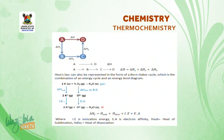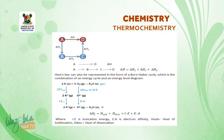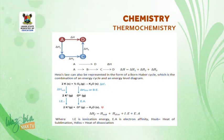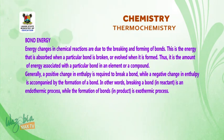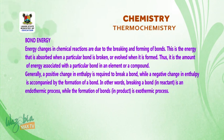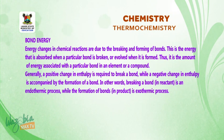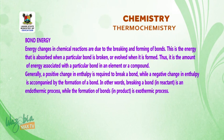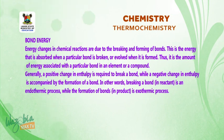Hess's law can also be represented in the form of a Born-Haber circle, which is a combination of an energy cycle and energy level diagram. For example, for potassium reacting with oxygen to form potassium oxide, the heat of formation of potassium oxide equals heat of sublimation plus heat of dissociation plus ionization energy plus electron affinity. Energy changes in chemical reactions are due to the breaking and forming of bonds. Bond energy is the energy absorbed when a particular bond is broken or evolved when it is formed — the amount of energy associated with a particular bond in an element or compound. Generally, a positive change in enthalpy is required to break a bond while a negative change in enthalpy accompanies the formation of a bond. Breaking a bond in reactants is an endothermic process while the formation of a bond in products is an exothermic process.